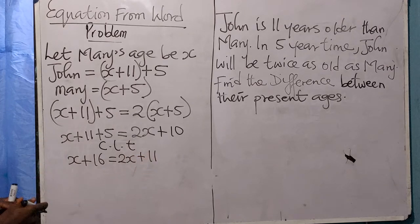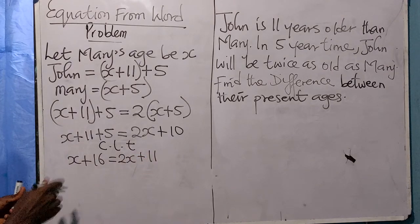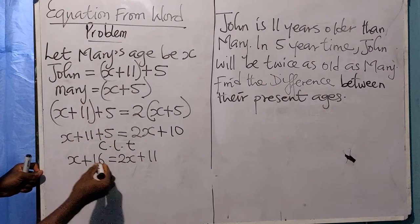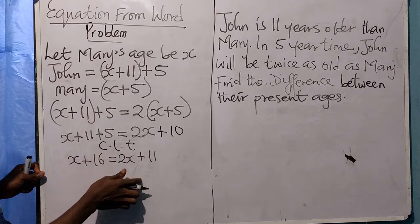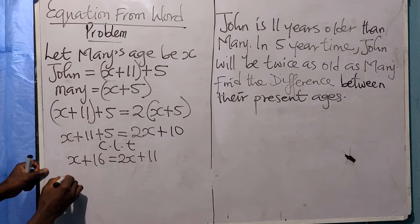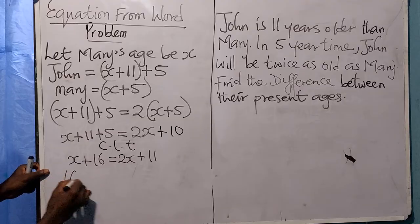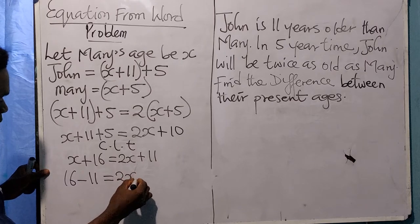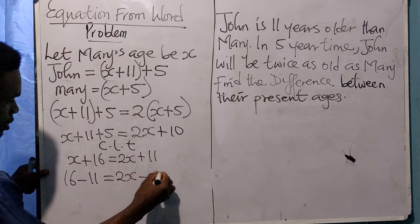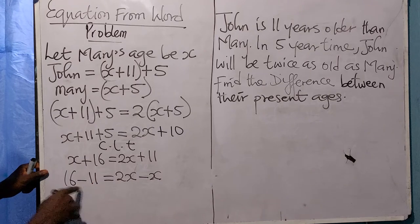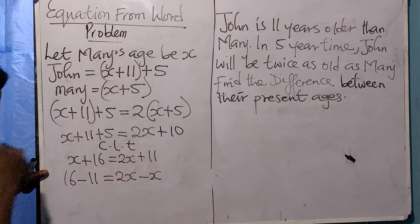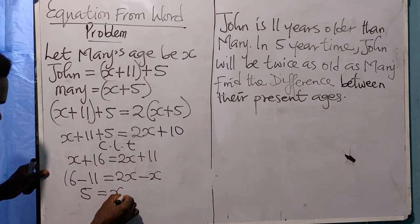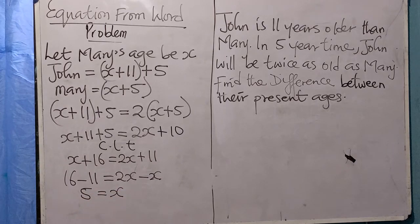Collect like terms. Let's take this to the other side. So it becomes x plus 16 equals 2x plus 10, which gives 16 minus 11 equals 2x minus x. So 16 minus 11 is 5, which equals x.